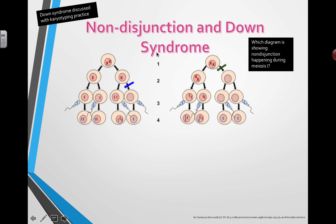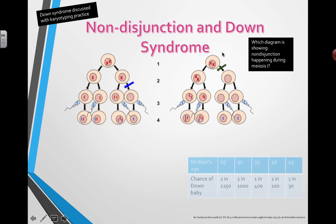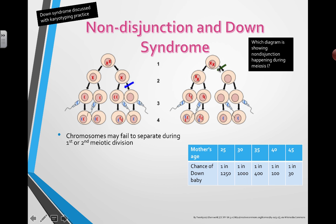In both of these cases you can see that chromosomes are not splitting up the way they're supposed to. It can happen in meiosis 1 during the first meiotic division, or it can happen during the second meiotic division as well. Either way, if you're looking at a karyogram, it's the 21st chromosome that doesn't divide properly, and so you end up with an extra copy.